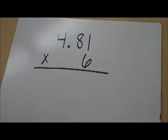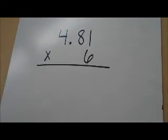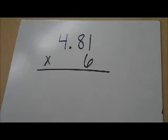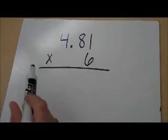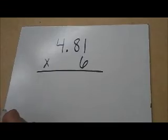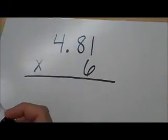Okay, in this first video we're going to show you how to multiply decimals by whole numbers in a few different ways. So we'll start with this one. We have 4 and 81 hundredths multiplied by 6 and we have to find the product.